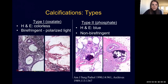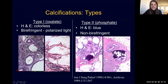Type 1 is the type that is colorless on H&E stain. So when pathologists do H&E staining, they may say they don't see calcifications — if this is the case, they may need to look at their specimens under polarized light to identify this type. Type 2 are the type that stain bright blue on H&E staining. Here we see these chunky blue bodies, which represent calcifications on H&E staining.